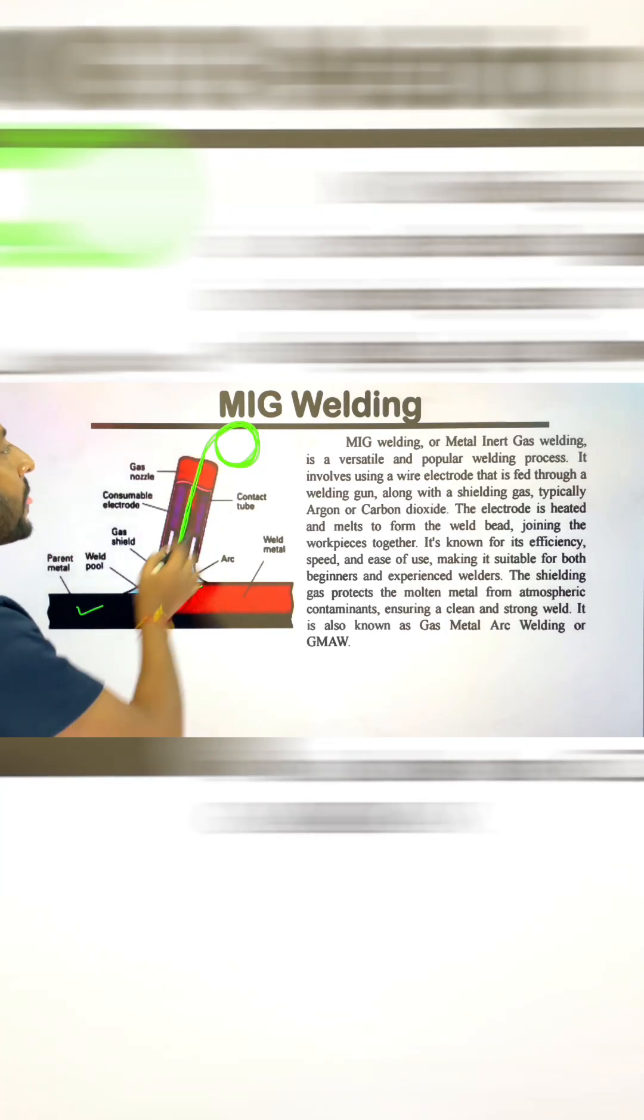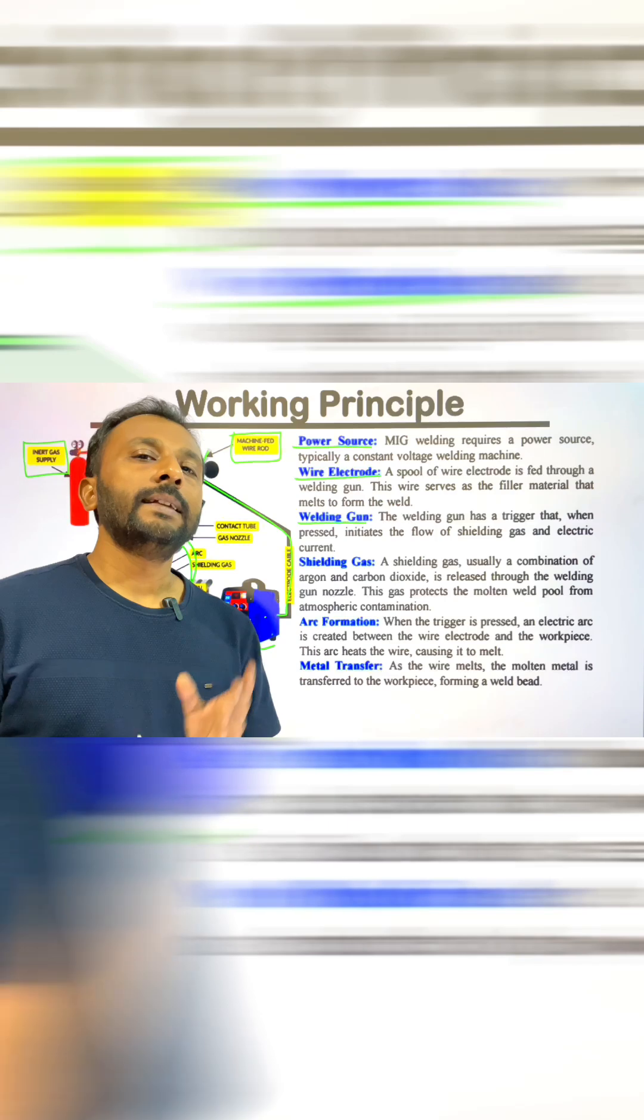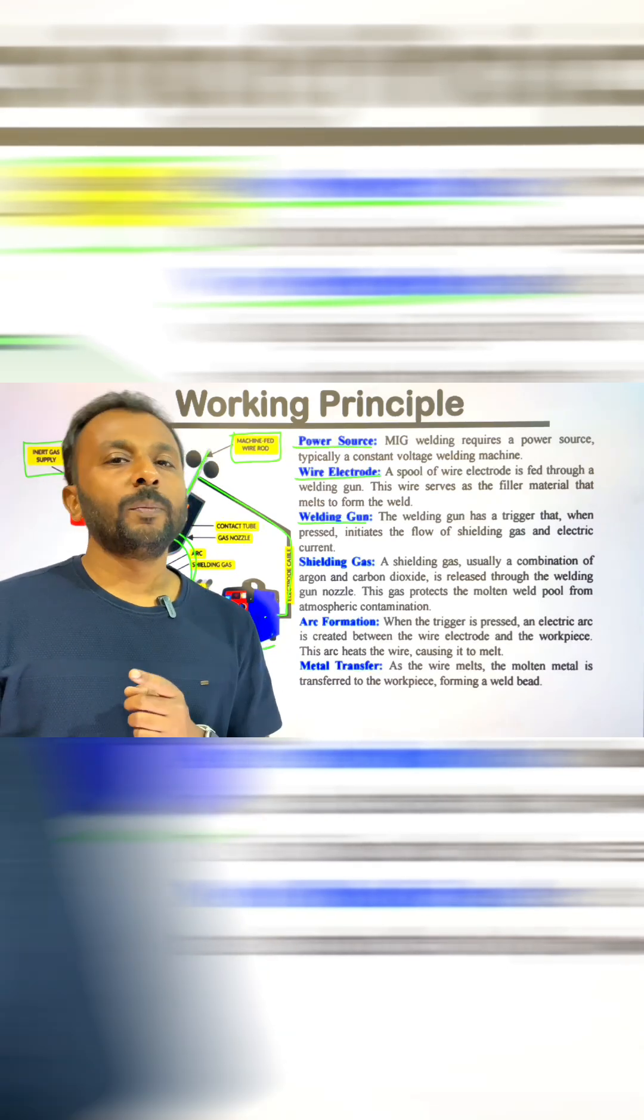The electrode deposits on the base metal and the supply is automatic in the welding machine. This welding process is slightly different from the TIG welding process. In TIG welding we use non-consumable bare electrode, but here we use consumable bare electrode. No flux is required; we use inert gas to shield the welding.